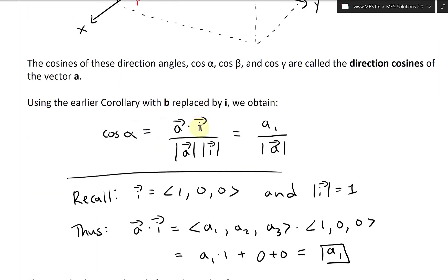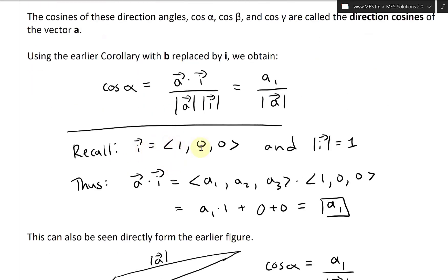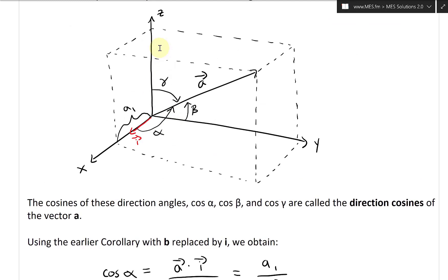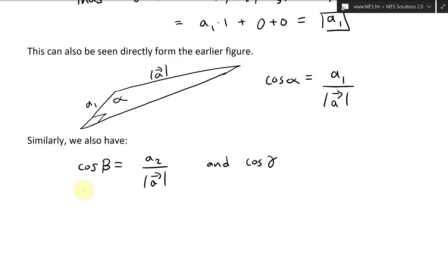Similarly, if we do the same thing for the other components, we use j instead of i, then k — because i is (1,0,0), j is (0,1,0), k is (0,0,1) — and you're basically using a different angle but exactly the same setup. Similarly we have: cosine beta equals a2 over the length of vector a, and cosine gamma equals a3 over the length of vector a.